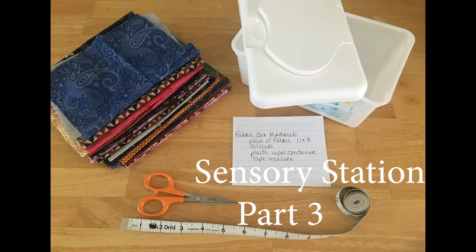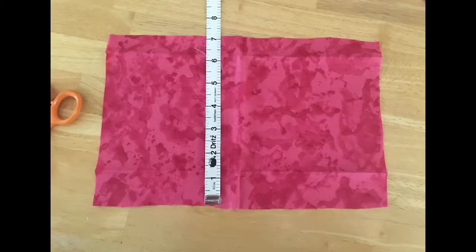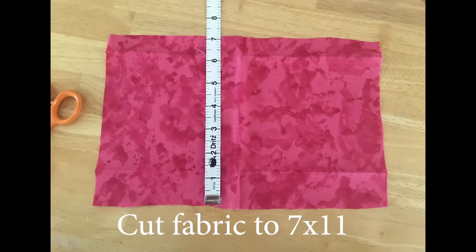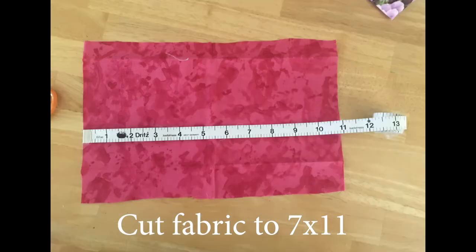Welcome to Sensory Station Saturday. Today we're going to make a tug box. What you will need are remnant pieces of fabric. Please cut that fabric to 7 by 11.